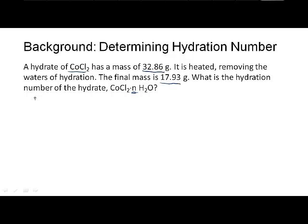What we need to do is find the number of moles of water and divide that by the number of moles of cobalt chloride without any water. The cobalt chloride without water is what we end up with, 17.93 grams. Let's figure that out first.